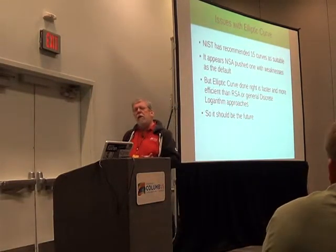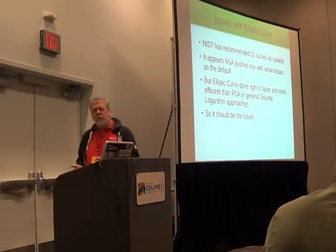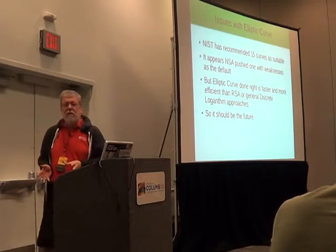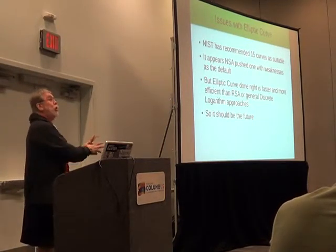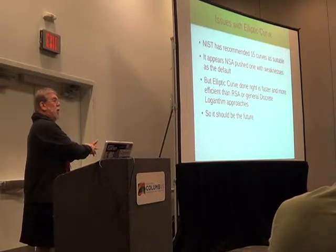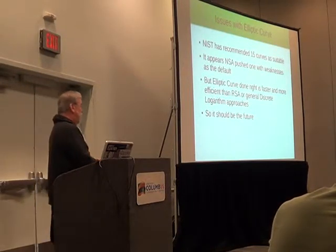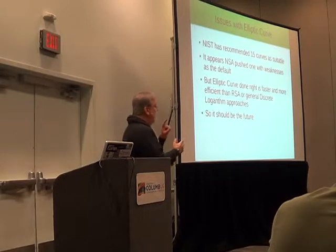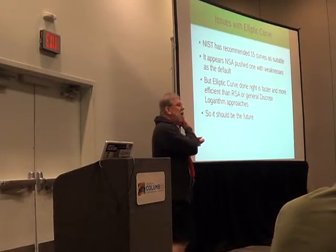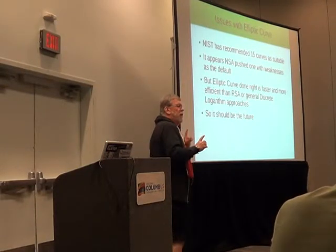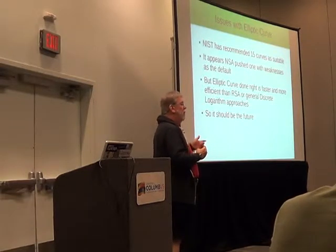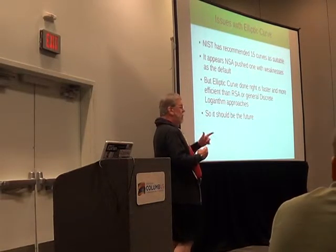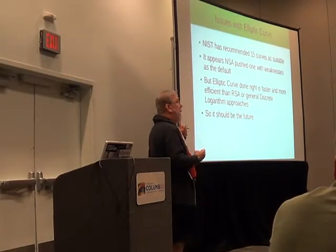It's pretty clear that the NSA forced this process into choosing as the default the curve that is deliberately weakened. That does not mean that the approach of elliptic curve encryption is bad. It means that this particular default curve is bad.